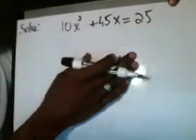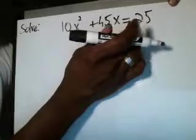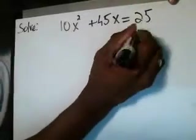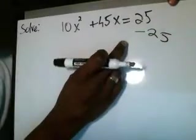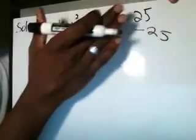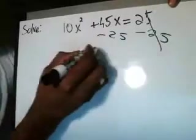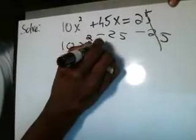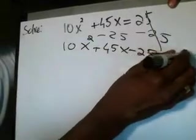To solve simply means to make this whole thing equal to 0 and solve for x. So to make this equal to 0, you're going to remove the 25 because if you do minus 25 here, this whole thing equals 0. So minus 25, and whatever you do on this side you must do on the other side because of the equal sign. If these two sides are equal, then whatever happens here has to happen here. So minus 25 on both sides, this gives you a 0. Now you're left with 10x squared plus 45x minus 25 equals 0.